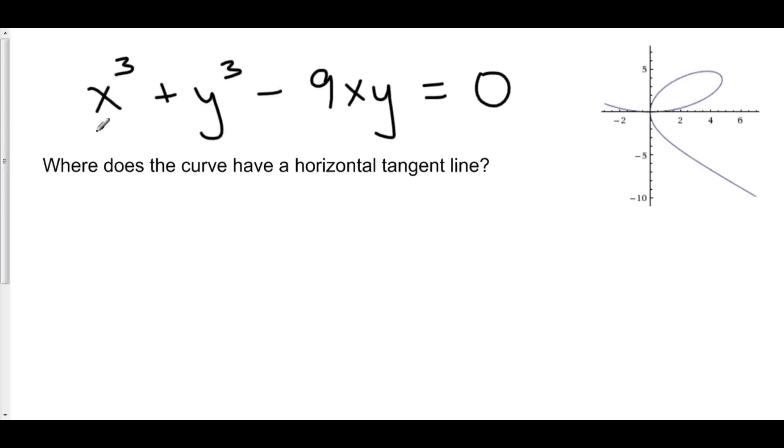The derivative of x cubed is 3x squared. The derivative of y cubed with respect to x, well, y is a function of x. It is stuff. So the derivative of stuff cubed is 3 stuff squared times the derivative of the stuff. That's my dy/dx.